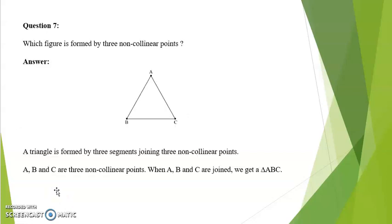Next is question number 7. Which figure is formed by 3 non-collinear points? Non-collinear points means points which are not in a straight line. If we take any 3 such points and join them, we get a triangle. A triangle is formed by 3 segments joining 3 non-collinear points A, B and C. When A, B and C are joined we get triangle ABC.